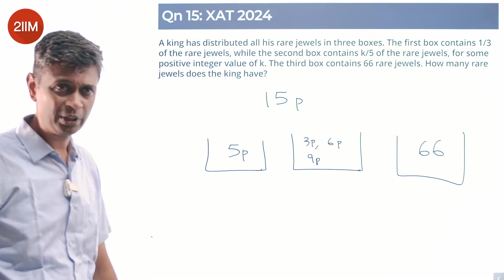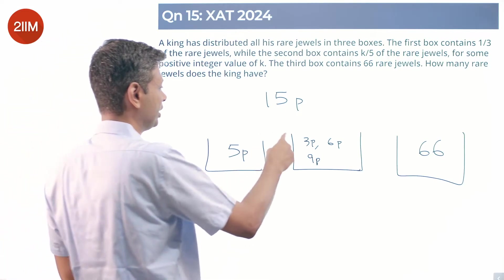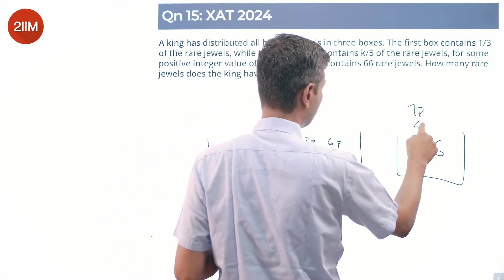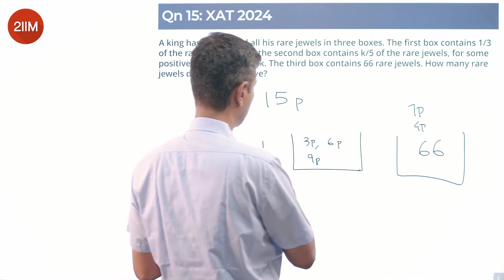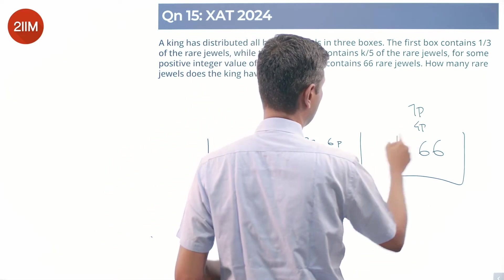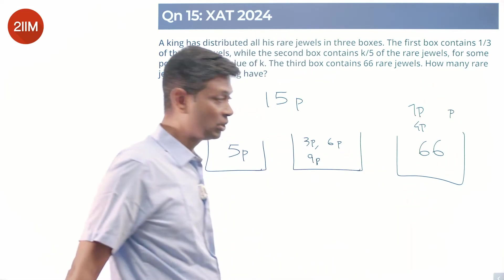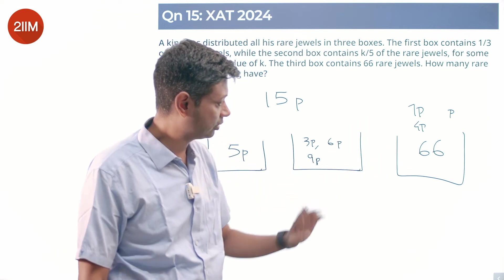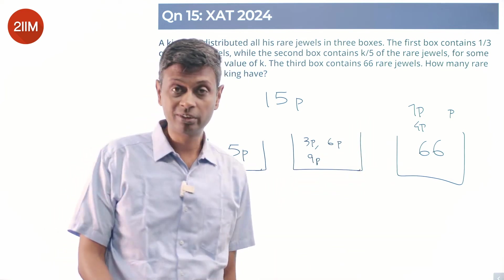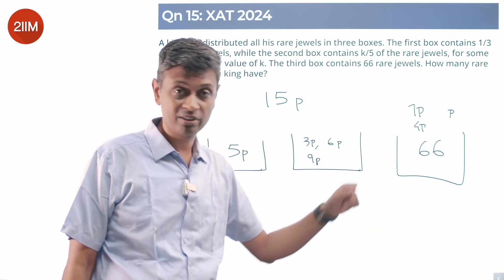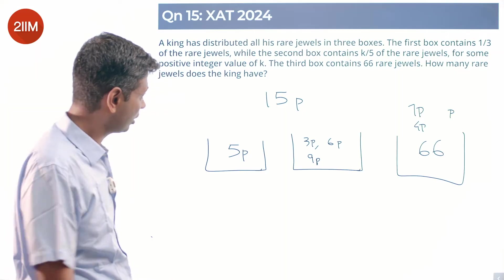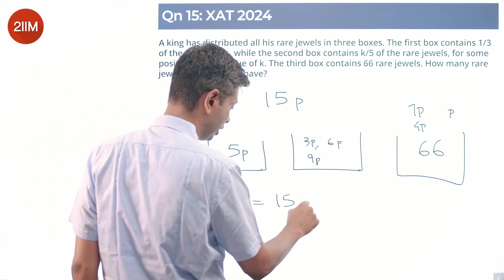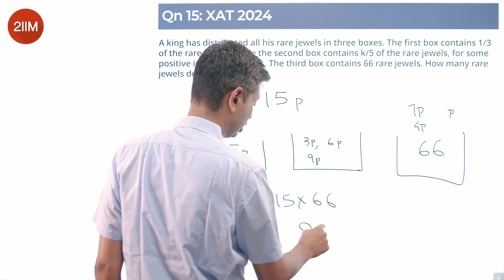Out of 15p, three possibilities exist. Five plus three is eight, leaving 7p. Five plus six is eleven, leaving 4p. Five plus nine is fourteen, leaving p. So 7p, 4p, or p should equal 66. Seven p cannot be 66 — it's not an integer. Four p cannot be 66 — it's not an integer. So p must equal 66.